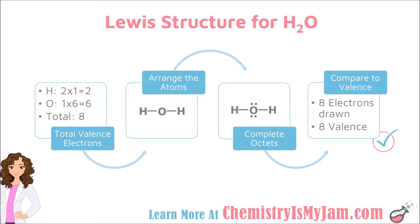Finally, you want to compare what you have drawn to the number of valence electrons that you started with. We started with 8 valence electrons, and what we have drawn is 8 valence electrons. Keep in mind that bonds count as 2. Our valence electrons match the electrons we have drawn. This is an accurate Lewis structure for water. It does not show me bond angles or how the structure might be bent, but it does give me the arrangement of the atoms and where any electrons are located.